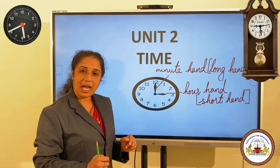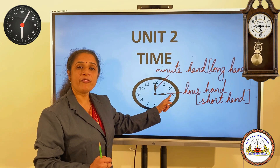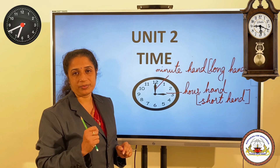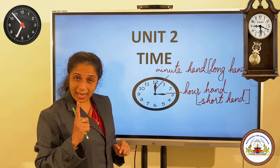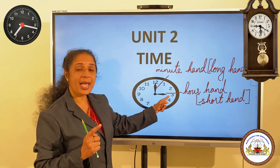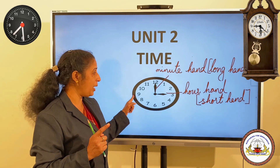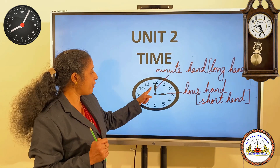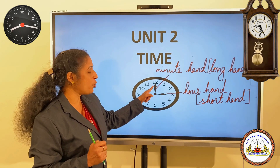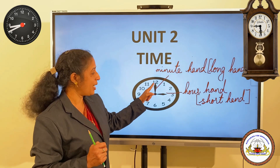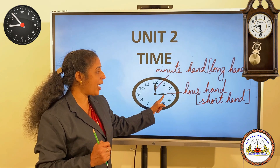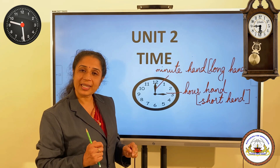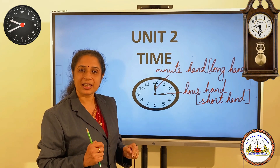The hour hand moves from one number to the next in one hour. The minute hand completes one round in one hour. If the minute hand points at twelve and the hour hand points at three, the time is three o'clock.